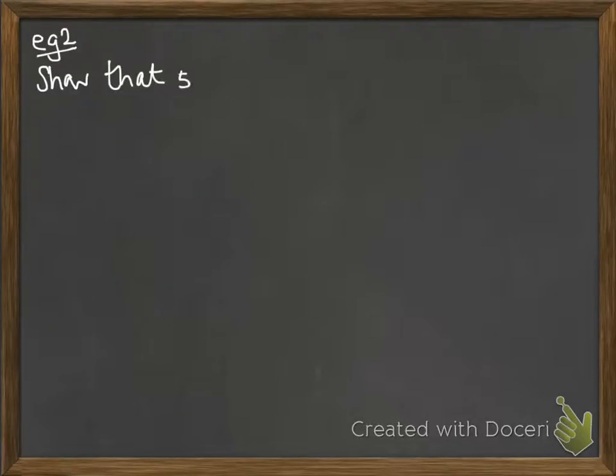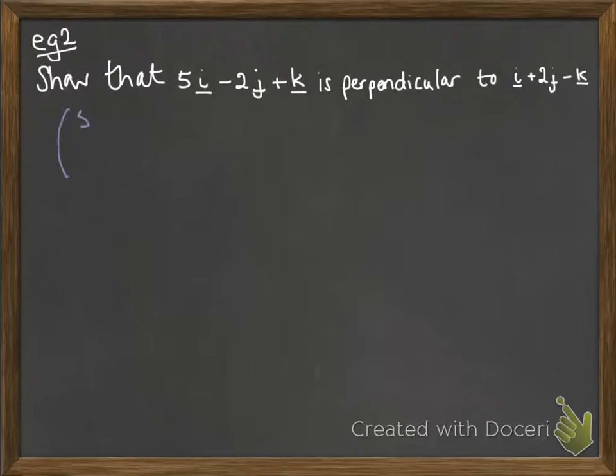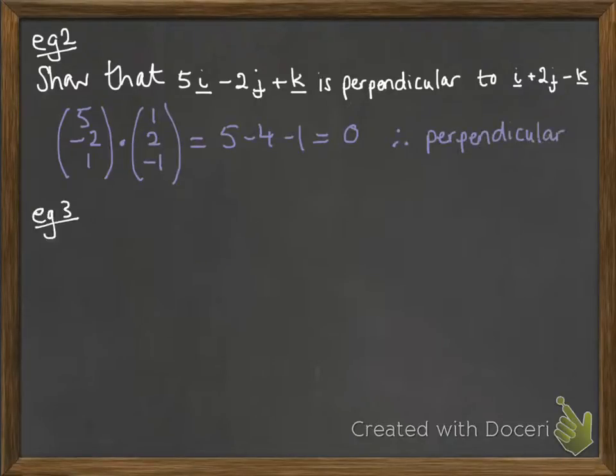Next example: show that this vector is perpendicular to i plus 2j minus k. If it's perpendicular, the scalar product will be 0. So let's work out this scalar product. It equals 0, therefore they're perpendicular.